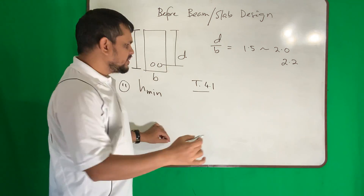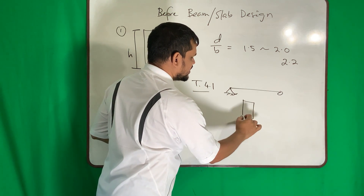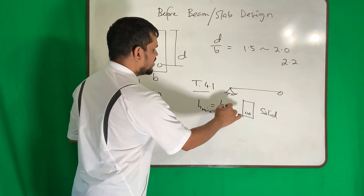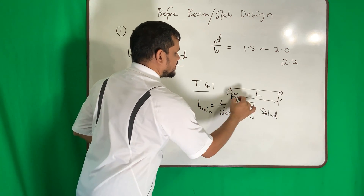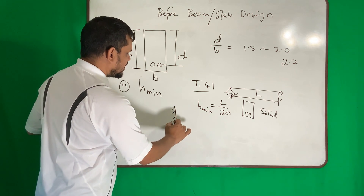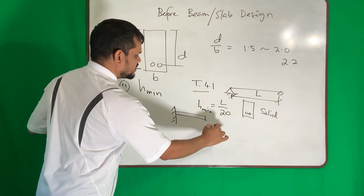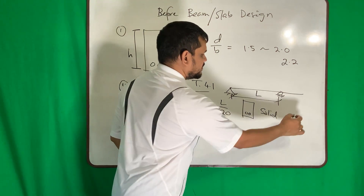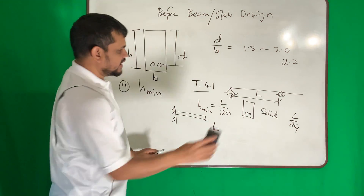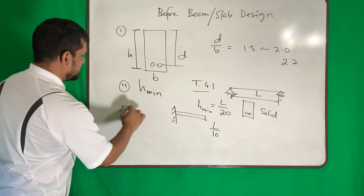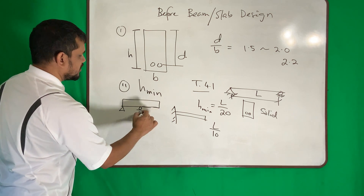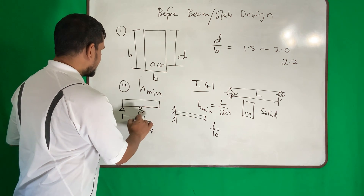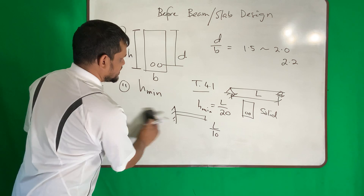The ACI recommended values are in table 4-1. For a simply supported solid beam, the minimum thickness should be L/20, where L is the span. For a cantilever, H minimum should be L/10. For one-side continuous, the minimum should be at least L/24.